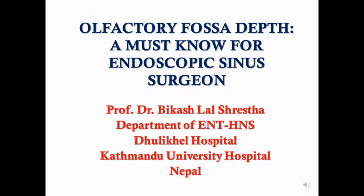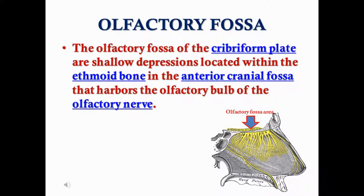Olfactory Fossa Depth: a must-know for the endoscopic sinus surgeon. The olfactory fossa is part of the cribriform plate. These are shallow depressions located within the ethmoid bone in the anterior cranial fossa, and it harbors the olfactory bulb of the olfactory knob, as shown in the figure.